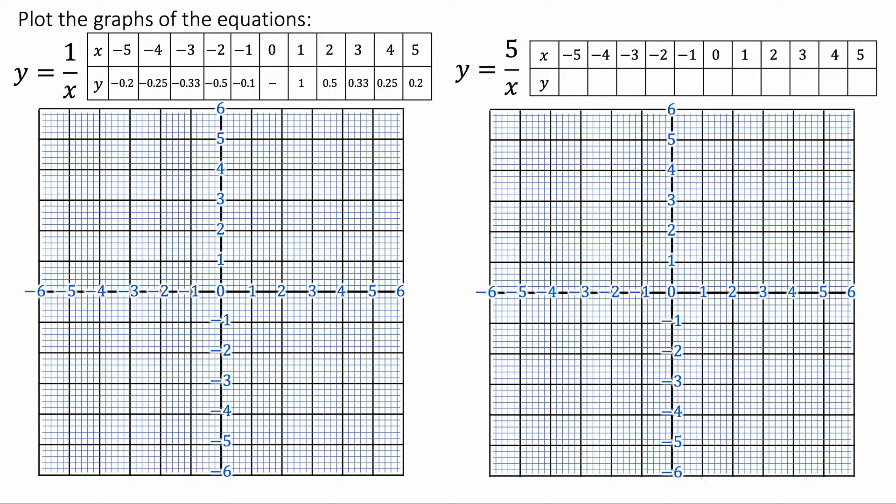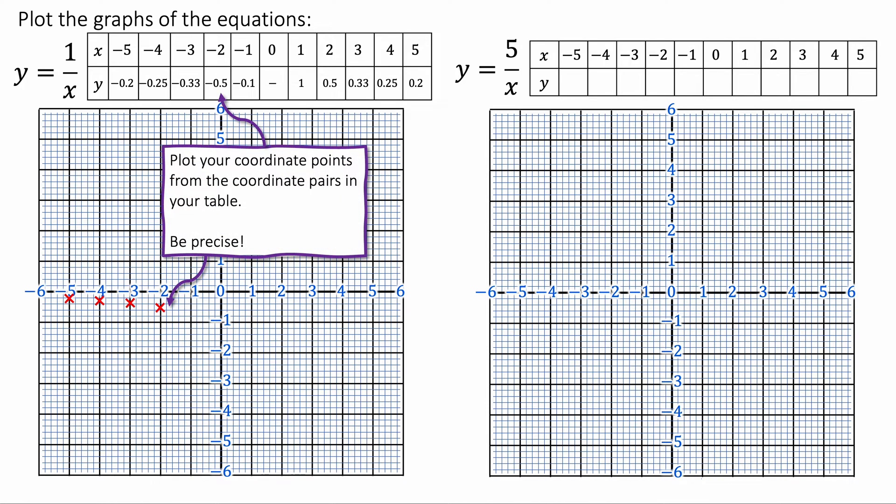We now have the table of values and we can plot these on the graph. So the first one is minus 5 minus 0.2 and it goes on the graph like that. So we're plotting the coordinate pairs onto the graph.